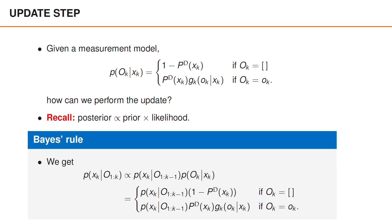If we plug in the expression for the measurement model, we get two possible expressions. A first possibility is that the matrix O_k does not contain any measurements, meaning the object was not detected, and the posterior is proportional to the predicted density times (1 - p_D(x_k)). A second possibility is that O_k contains a measurement vector, which is the object detection, and the posterior is proportional to the predicted density times p_D(x_k) times the measurement model for the vector o_k. Since we have assumed that O_k is known, we always know which of the two expressions to use.